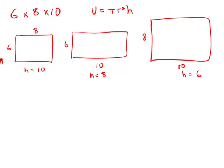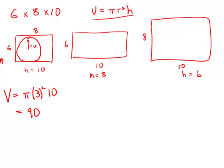Well, that means that the circle is going to have a radius of 3. And if the circle has a radius of 3, we'll use this formula: volume is πr²h. The volume would be π times 3 squared times 10, and that is 90π. So that would be the volume if we use that side.